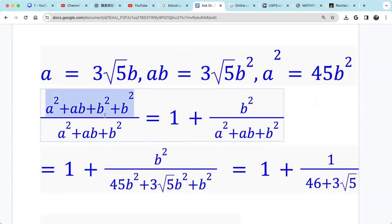Then you see this part, this one, just 1B squared, is the same as the denominator. So we can write it as 1. Then we're only left with B squared divided by A squared plus AB plus B squared.